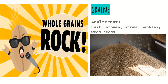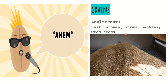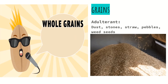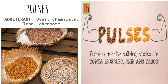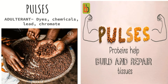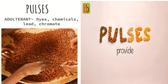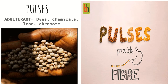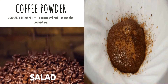These are the most common adulterants used in grains and the harmful effects can be toxicity in the body or liver disorders. Next we have pulses — the adulterants used in pulses are dyes, chemicals, lead chromate, and some metals, and the harmful effects can be stomach disorders. Next is coffee powder — the adulterant used is tamarind seeds powder and it may cause diarrhea.